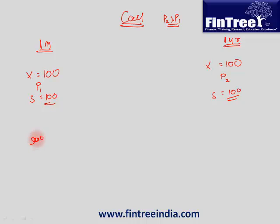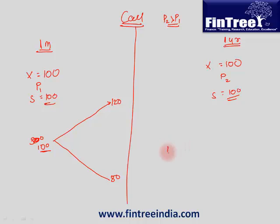In one month's time, this 100 rupee can either increase and become 120 or it can become 80. But do you agree that in one year, the amount of volatility can be substantially higher? So in one year, this 100 might become 200 or it might simply become 10 rupees.